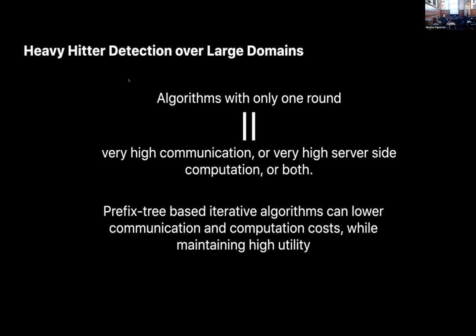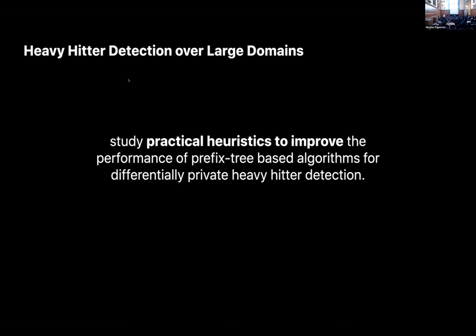There are lots of algorithms for differentially private heavy hitter detection. Most of the ones that work in a single round have either very high communication complexity or very high server-side computation. RAPPOR is an example of something with very high communication, and compressed versions of RAPPOR have very high server-side computation. We want an algorithm that works well, we're willing to go to multiple rounds, and has lower system requirements. There's a prefix-based algorithm, which is an iterative algorithm that has lower communication and computation costs while still having high utility. Our goal in this work was not to redesign the wheel in these prefix-based algorithms, but to study practical heuristics that improve their performance in practice.